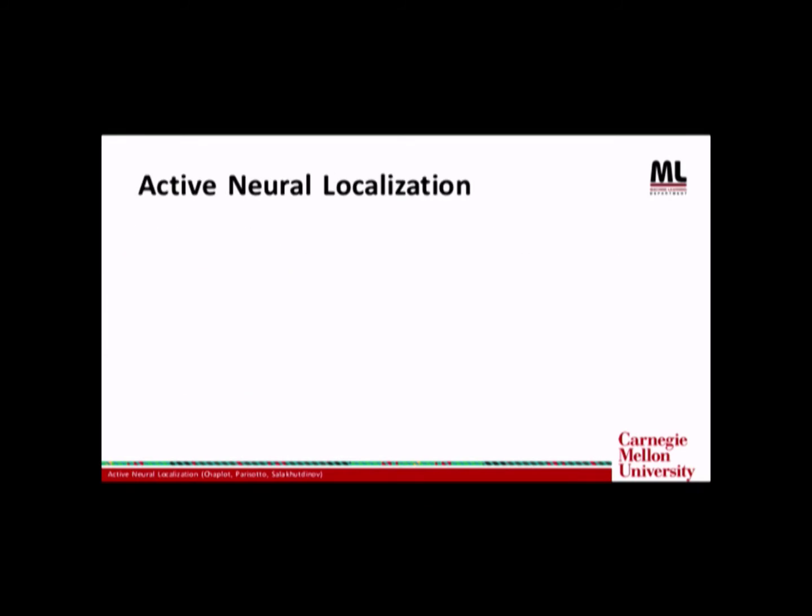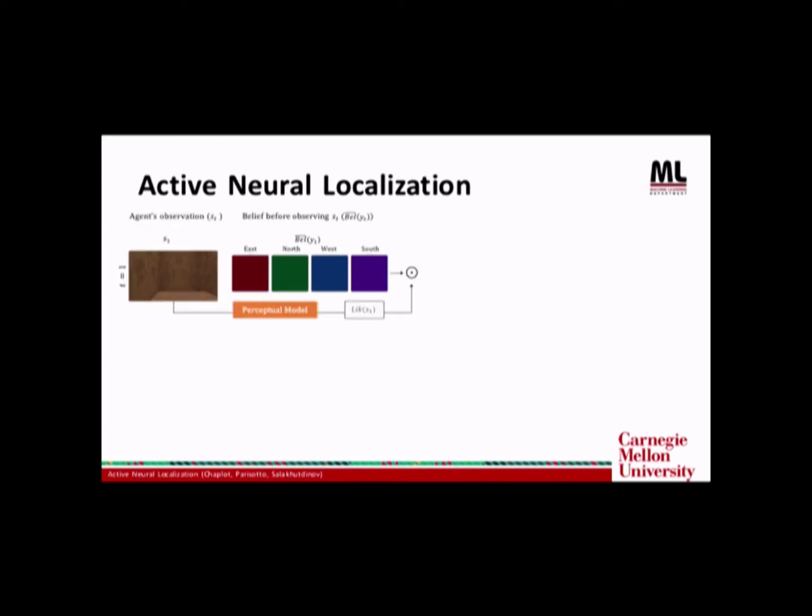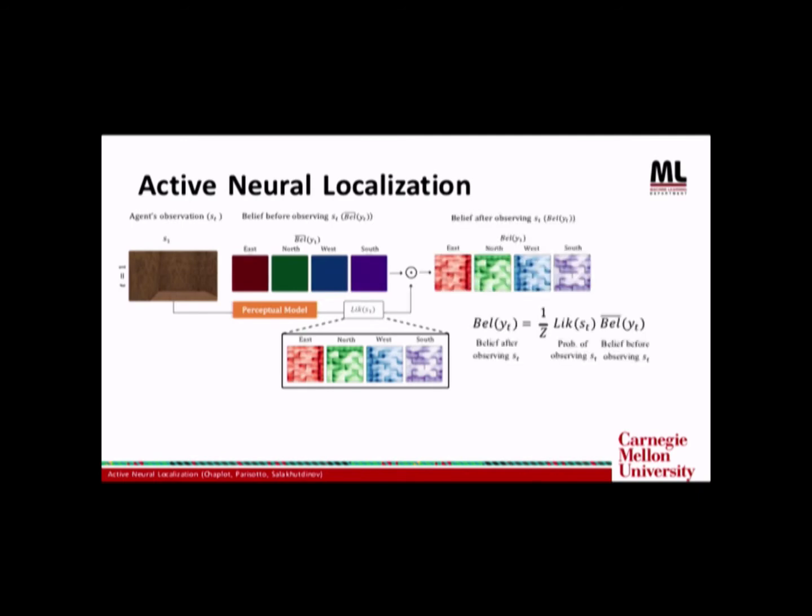I'll go through our model by running through a real example. At the start of the episode, the agent has no idea about its location. So its belief is simply uniform. The agent observes the first frame and it goes through a perception model, which is actually a convolutional neural network. And it predicts the likelihood, which looks something like this. The posterior belief is calculated by taking an elementwise dot product with the prior belief and likelihood. This is analogous to the second belief update equation we saw earlier in Bayesian filtering.